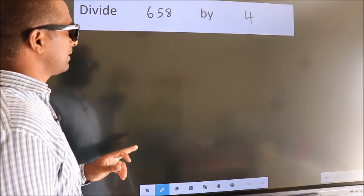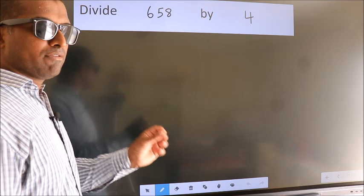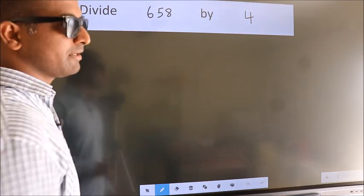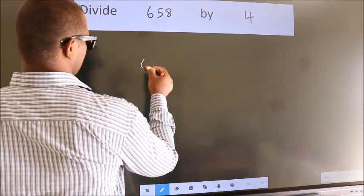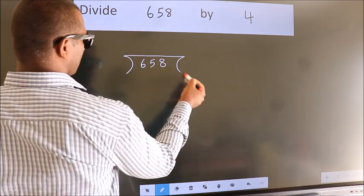Divide 658 by 4. To do this division, we should frame it in this way. 658 here, 4 here.